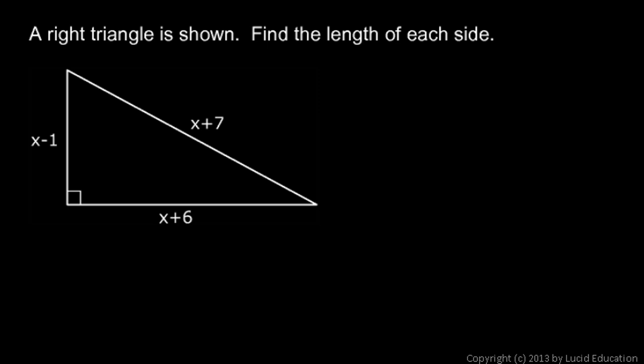Even though we don't know what x is, we do know that this side squared plus that side squared have to add up to the hypotenuse squared, so we can write that. We can write x minus 1 squared plus x plus 6 squared is going to equal x plus 7 squared.